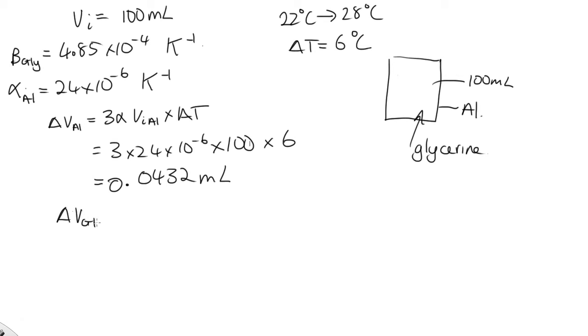The change in volume for the glycerin is equal to 4.85 times 10 to the minus 4, the beta, times the initial volume, which was 100 milliliters, and then times the change in temperature, which is the 6 degrees. Doing that on the calculator, we end up with 0.291 milliliters.